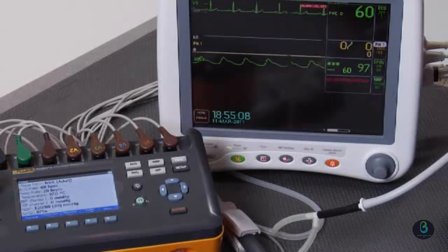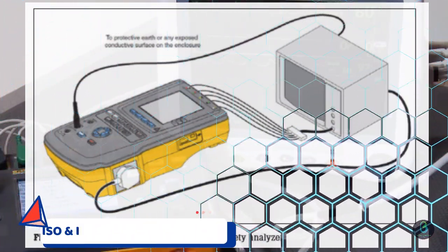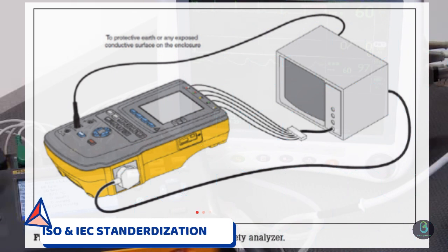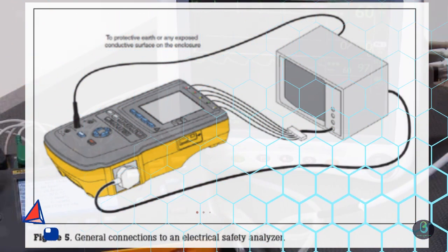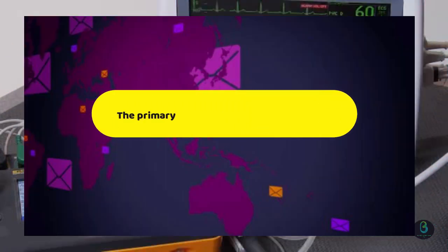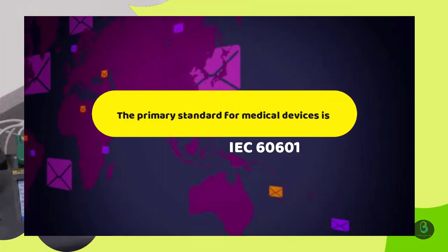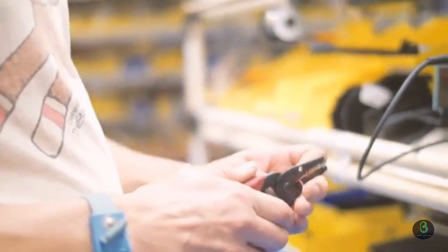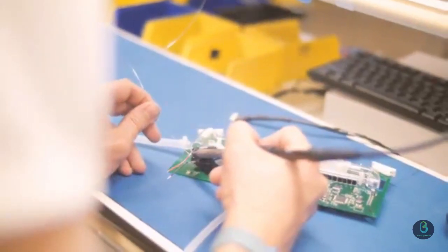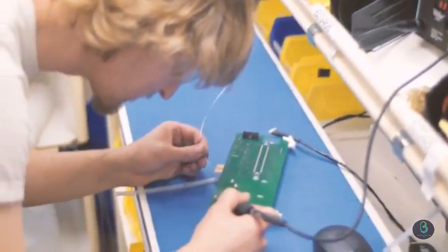There are General and Specific Standards for Medical Device Electrical Safety. The primary standard for medical devices is IEC 60601. General requirements for protection against electric shock hazards are covered in IEC 60601.